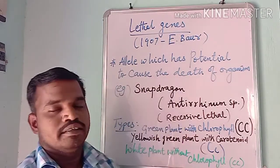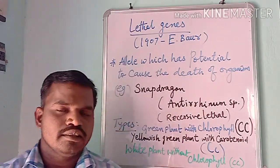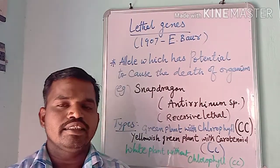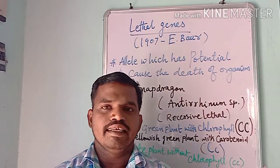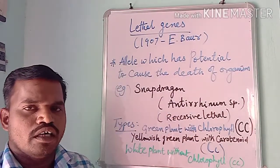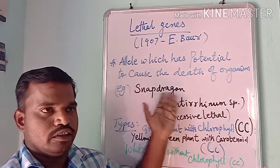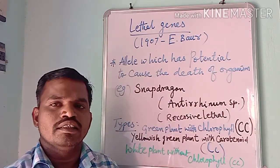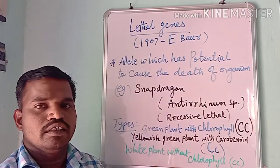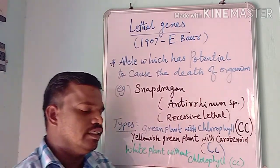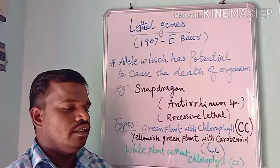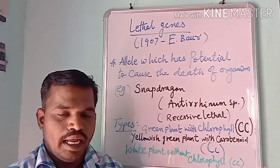Let's discuss about lethal genes. Certain genes have the potential to cause the death of an organism. This type of genes we call lethal genes. It was first observed by E-bar in 1907. E-bar proposed this hypothesis and identified these lethal genes, defining that certain genes are lethal to plants — they lead to the death of the plants.